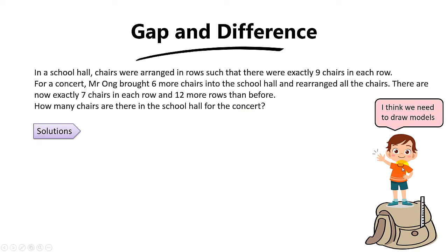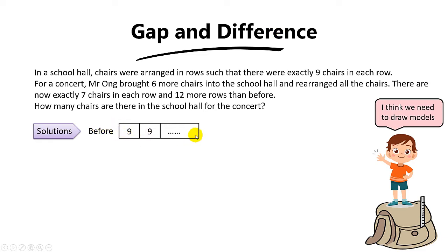Let's draw models to help us identify the gap and the difference. Before, each row has nine chairs. Since we do not know the number of rows, let's put a dot here, because we do not know exactly how many rows there are.